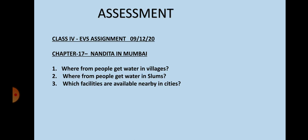Today's assignment: Question 1 — Where do people get water in villages? Question 2 — Where do people get water in the slums? Question 3 — Which facilities are available nearby in the cities? Children, write down these answers in your notebook and learn the answers with your spellings. That's all for today's class. Thank you.